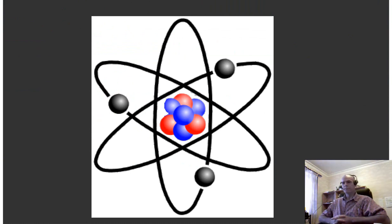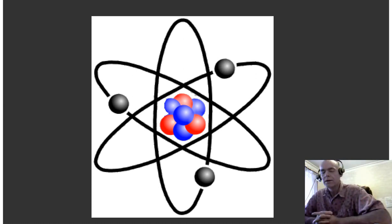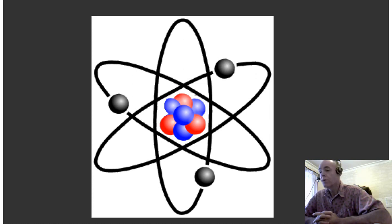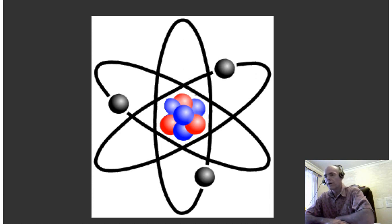Let's just talk about atoms and molecules and materials for a moment. All materials are made up of atoms. A material that is made of one type of atom is called an element. Some examples of elements are copper, zinc, carbon and iron, and there are over a hundred different types. Materials that are made up of more than one atom are called molecules. For example, water is made up of the atoms hydrogen and oxygen. H2O is the chemical equation for water because it contains two atoms, hydrogen and oxygen.